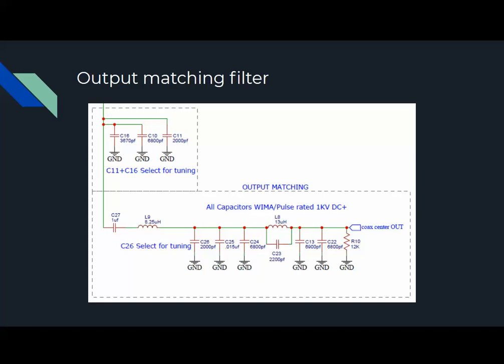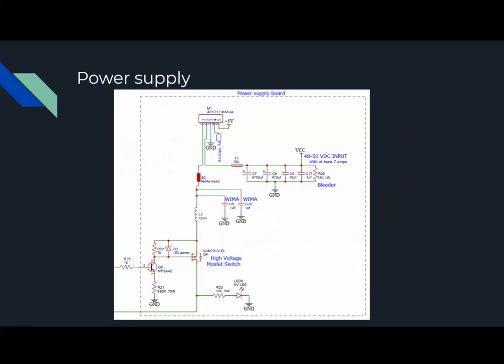And then here's the output matching filter, and it was optimized to provide a 50 ohm output. The power supply circuitry here, and notice the bleeder resistor in there to make sure to discharge the caps. Also, there is a high amperage switching MOSFET that will turn the 50 volts on and off to the MRF300.